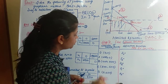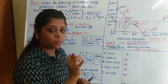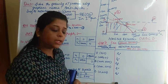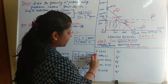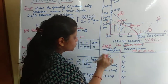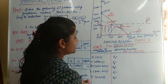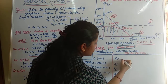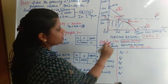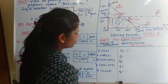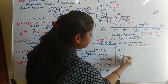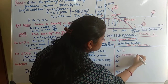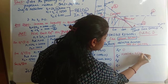To find the optimal solution, you write the corner points and find the value of Z for each one. The corner point O is the origin (0, 0), so Z = 0. Point A is (1500, 0), so Z = 3 × 1500 + 0 = 4500.